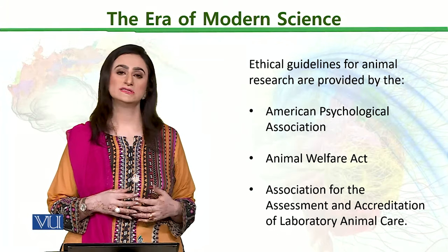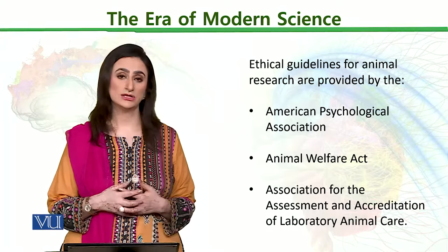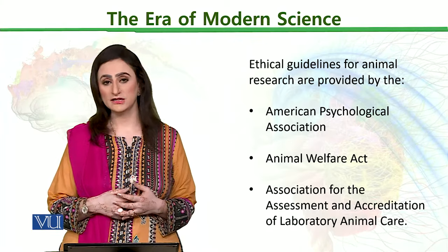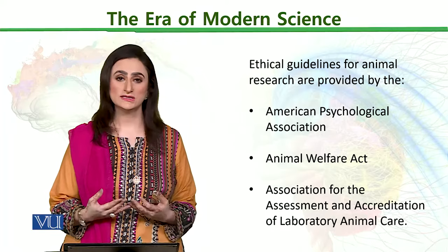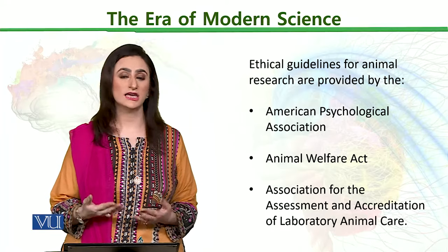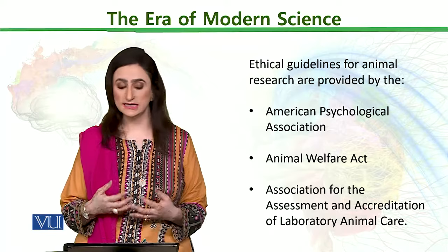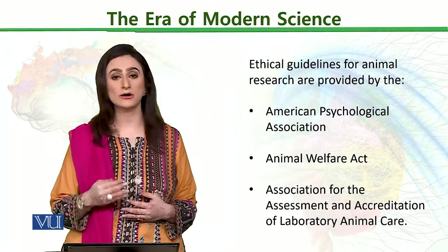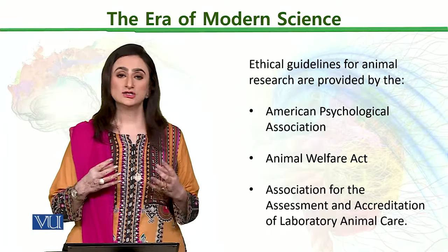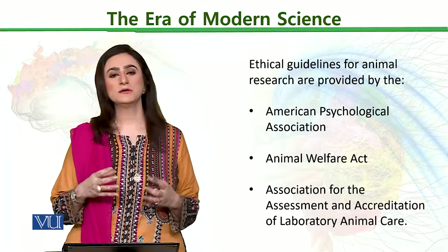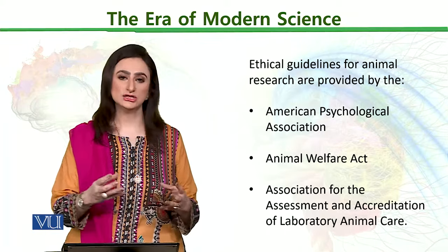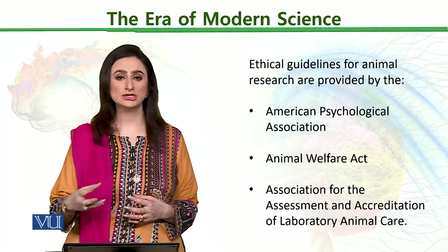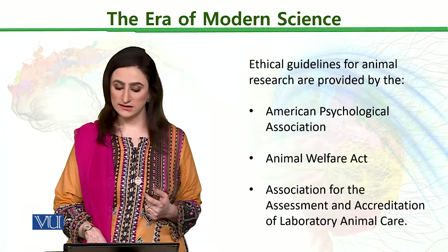Ethical guidelines for human research are provided by the American Psychological Association. Iske saath-saath — in addition to this — the Animal Welfare Act also gives us suggestions and guidelines on how we should deal with animals. Then there is the Association for Assessment and Accreditation of Laboratory Animal Care. Their main principles are mostly similar to each other, but the sensitization according to experimentation may be different in nature in each of these acts and codes of ethics.